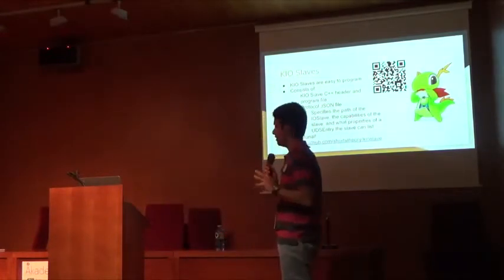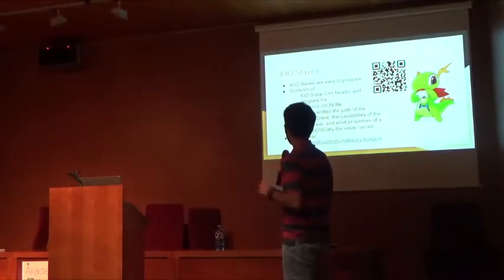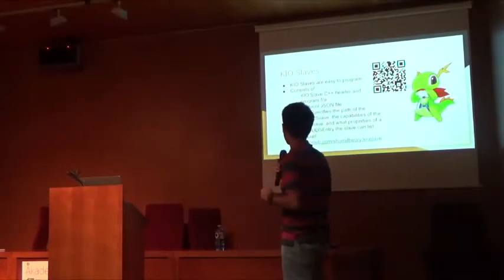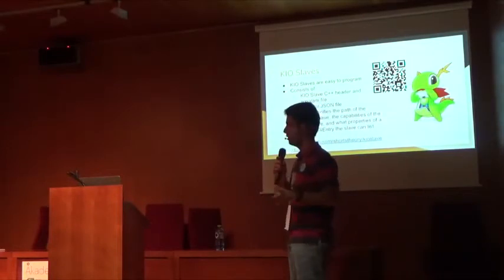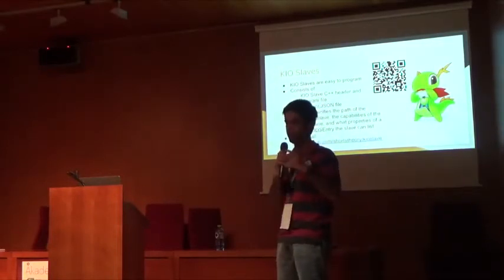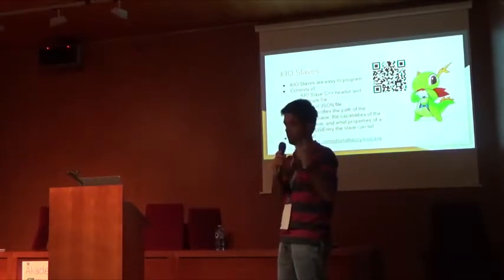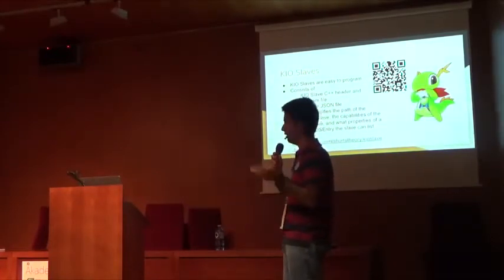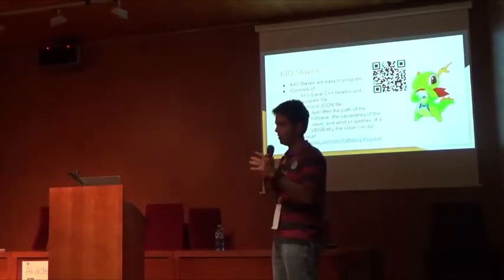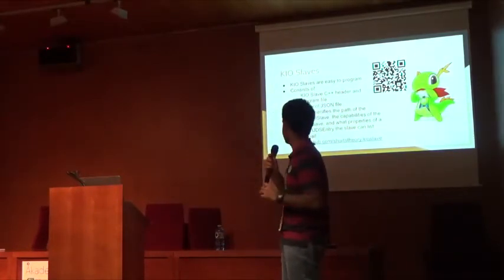They're actually quite easy to program and don't require much work. You have a class list header and program file, and then you have a protocol JSON file. The protocol file specifies what the KIO slave can do in terms of what entries it can list, whether it can list directly at all, and the path of the KIO slave.